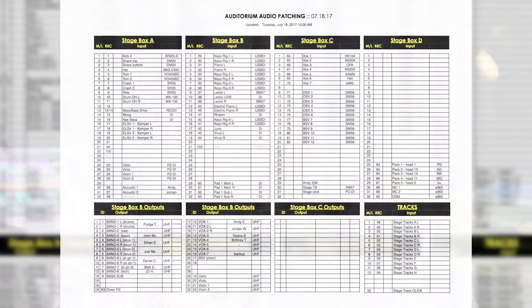On our input list there's a patch number — where does an input physically go into a sub snake on stage? Is it sub snake one, two, three, four? Whatever your labeling convention is, it shows where it goes into the physical stage patch. Then there's an ID number so we know on the console where it lands. And then it's labeled — not 'Jim's guitar,' that doesn't mean anything. I want to know: is it stage right, stage left, center stage, downstage center?